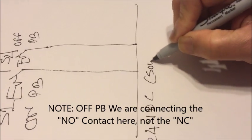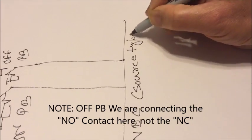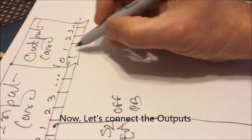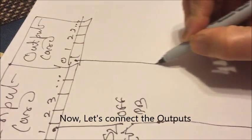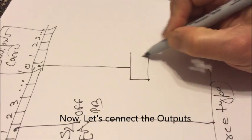and for the output card the relay coil we are connecting to output 0 and similarly the green pilot lamp to output 1.